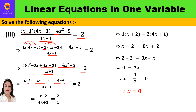All of this is divided by (4x plus 1) equal to 2. Now you can observe that 4x² and minus 4x² cancel each other. We are left with x, and minus 3 plus 5 gives plus 2, so we have (x plus 2) in the numerator with denominator (4x plus 1). And 2 can be written as 2/1.